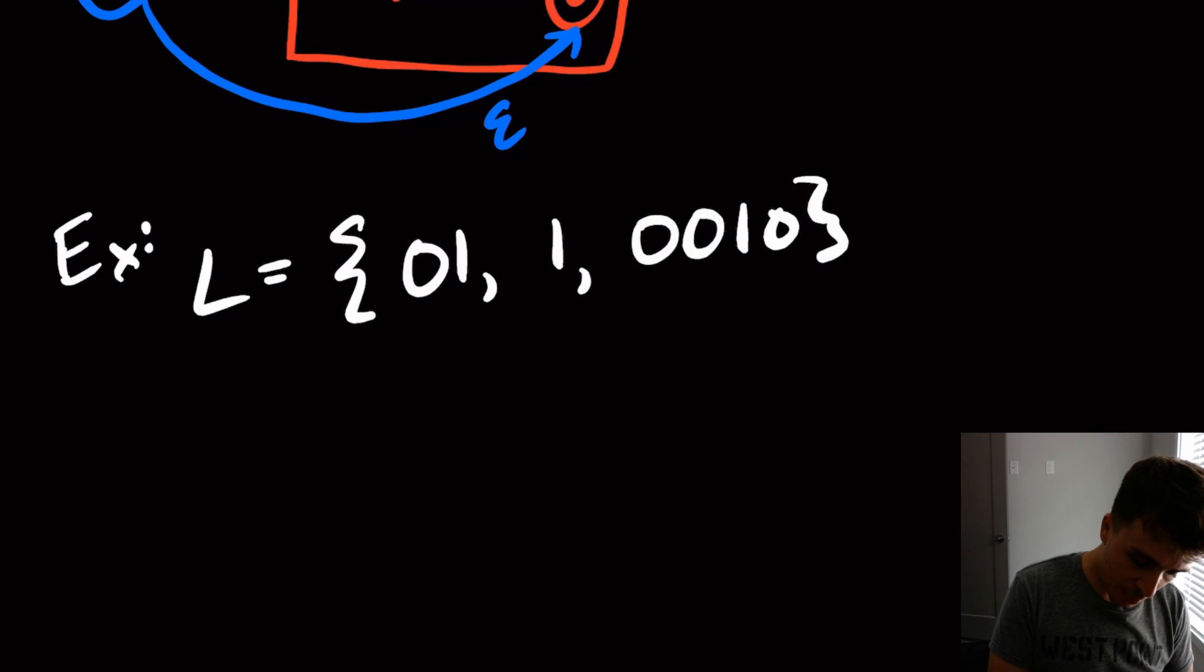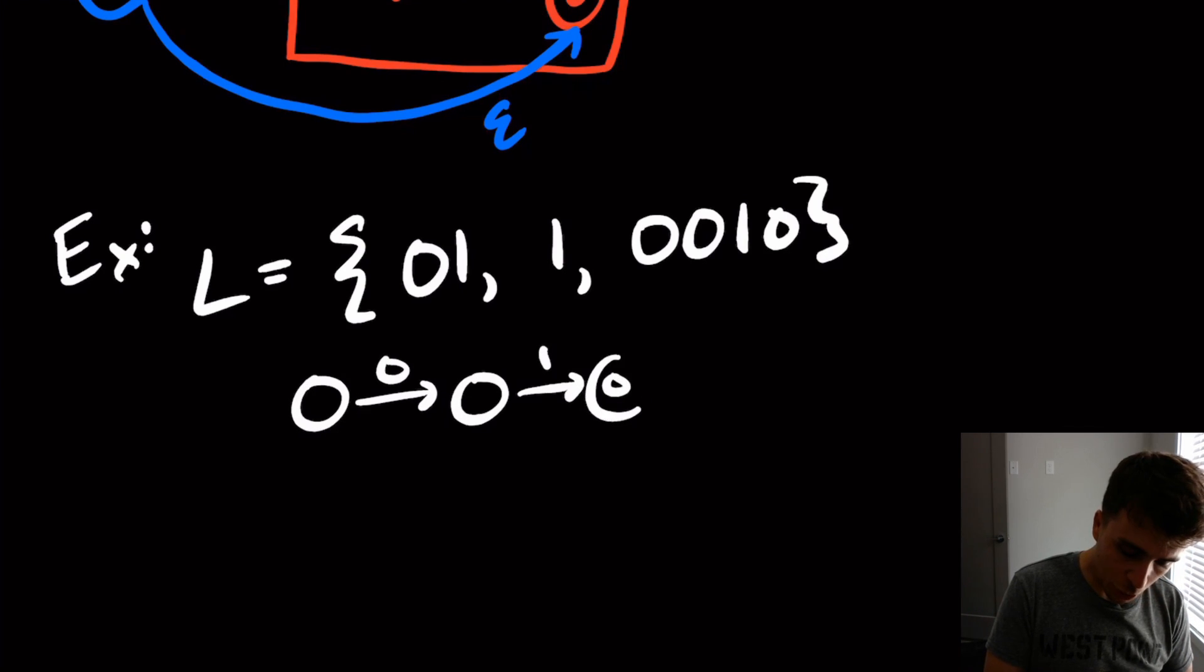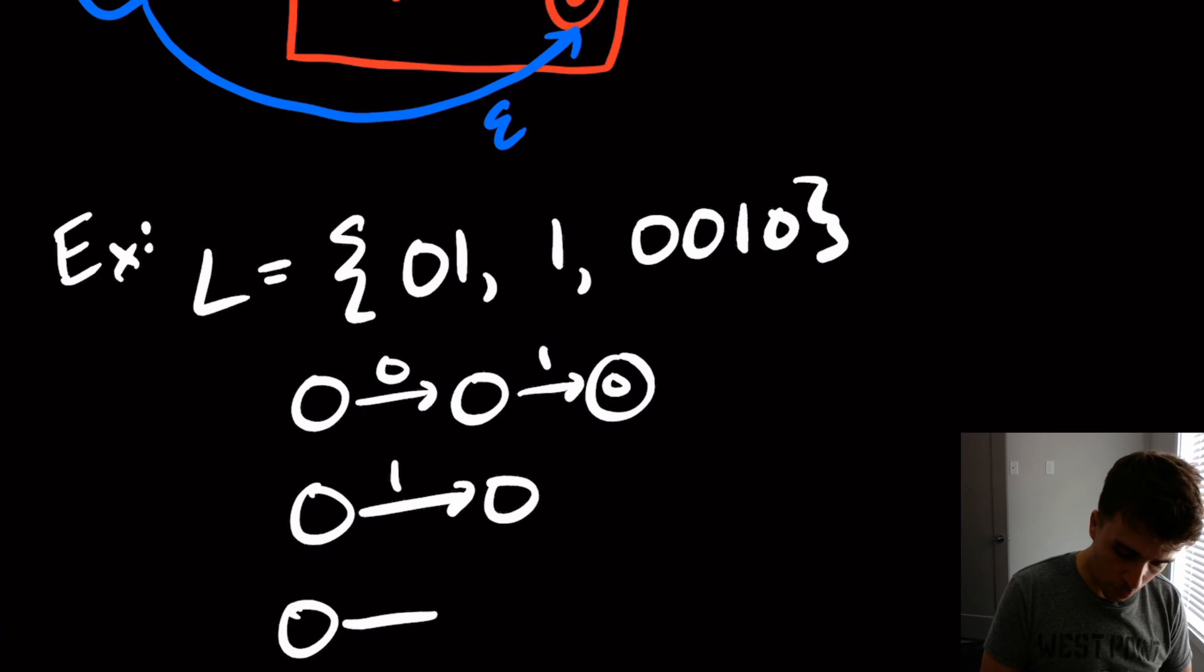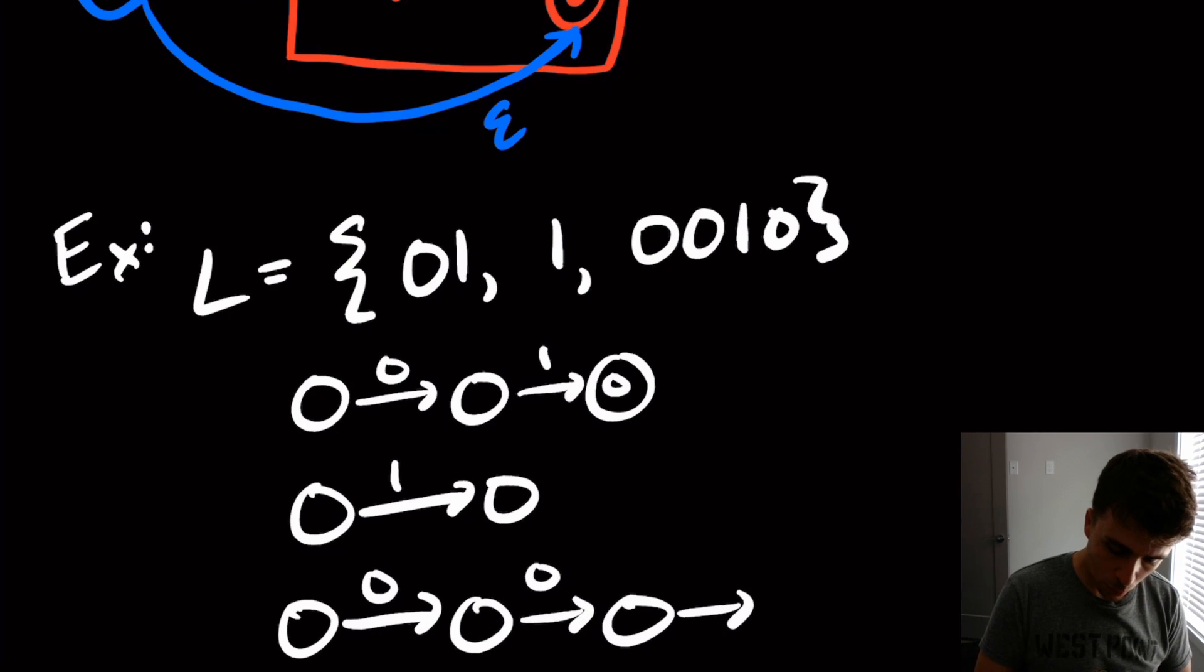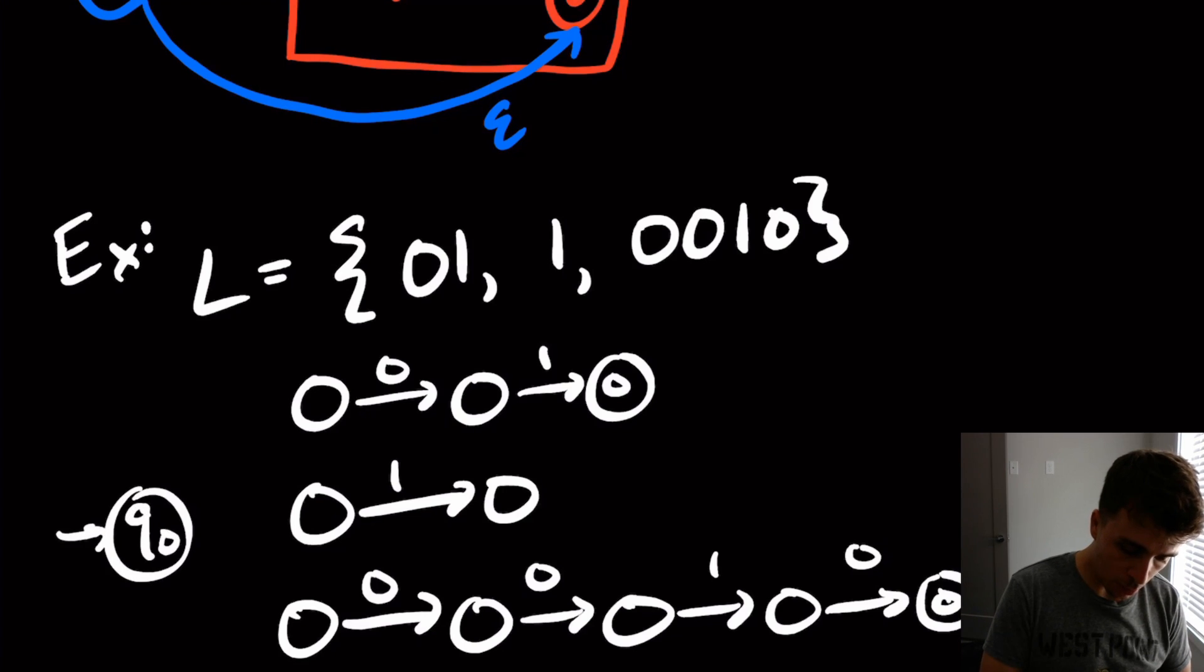So I can make a state here 01 to get the 01 part. I can make one for just the one. And I can make one for 00103. And I'll make a start state q0, which has an epsilon transition to all of these three.